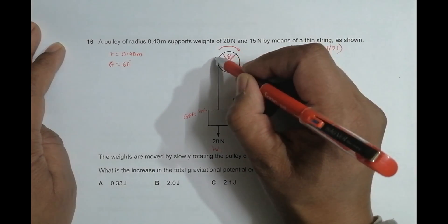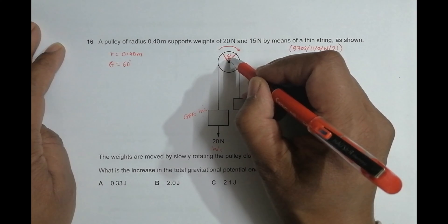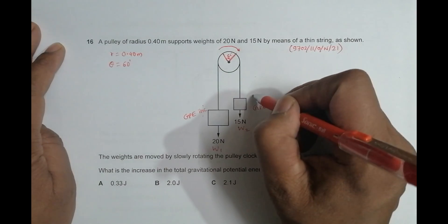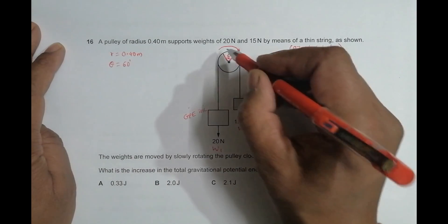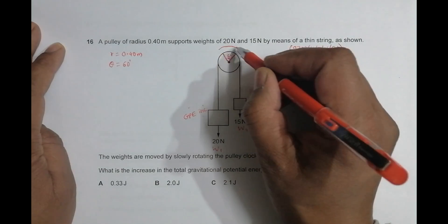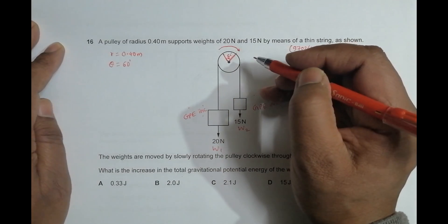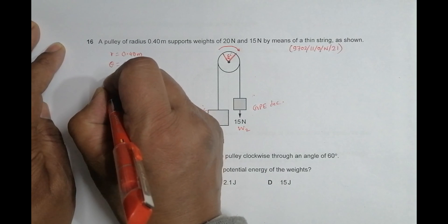So we have to find how much height does it move up or down. And that height is equal to the displacement along this circular arc during that 60 degree rotation. These heights, the change in these heights are equal to the angular displacement that happens here. So first let us find that angular displacement.